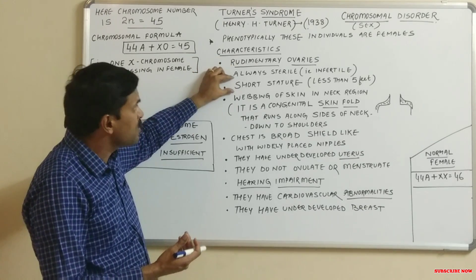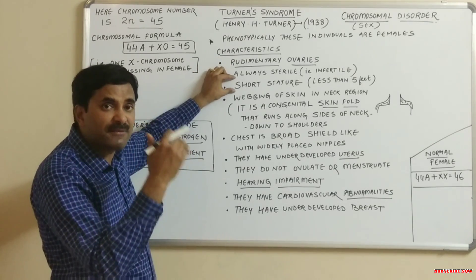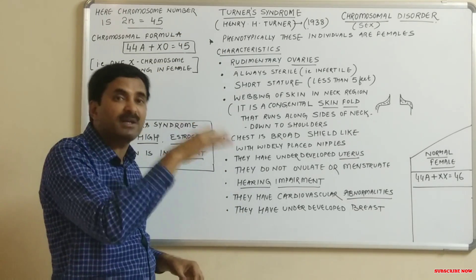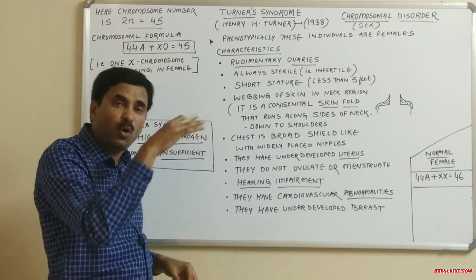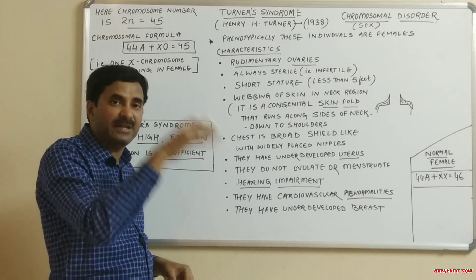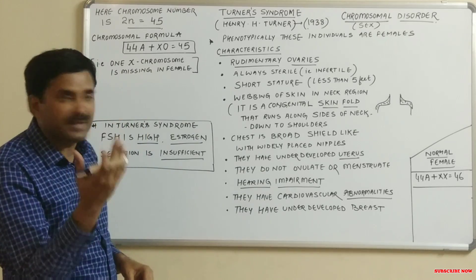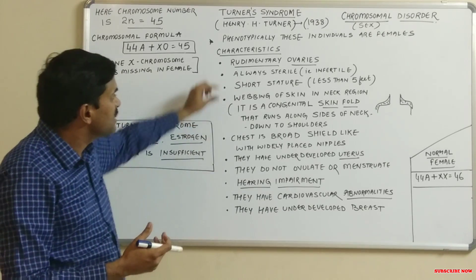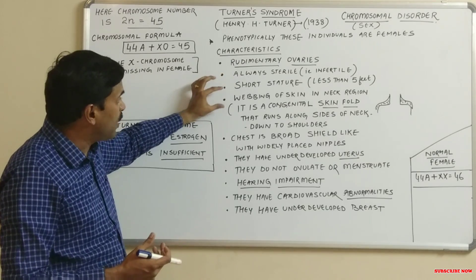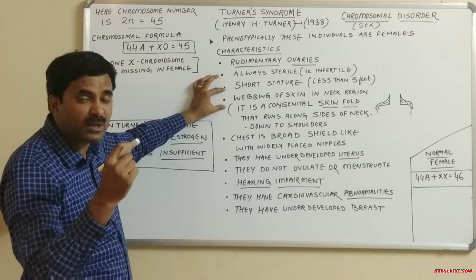Turner syndrome females also have short stature. Their height is always below five feet — it may be around four and a half feet. This short height is another prominent feature of the condition.